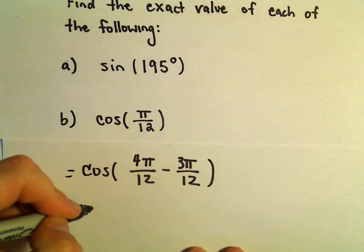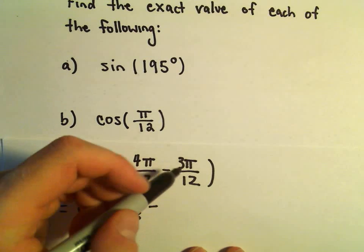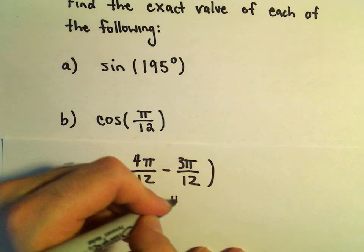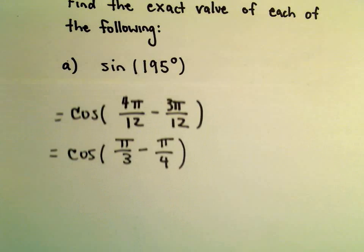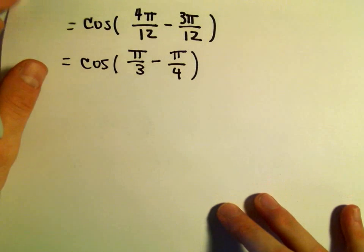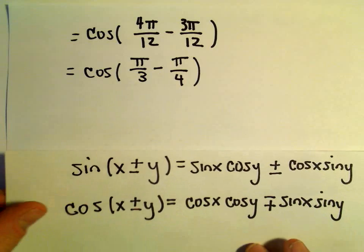And let's see, cosine of 4 pi over 12, that's really the same thing as pi over 3. 3 pi over 12, we can reduce that to pi over 4. And I know how to evaluate cosine and sine at the angle pi over 3 and pi over 4. So this seems like a good way to write it.